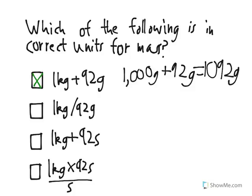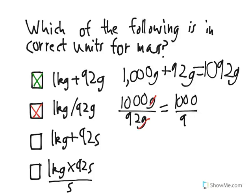Now the second one looks like it might, after all, only includes kilograms and grams, but it isn't. See, the kilograms divided by grams is the same as 1,000 grams divided by 92 grams, and then the grams terms cancel out, leaving us with just 1,000 over 92, which is dimensionless. And this is supposed to be units for mass, which would be grams or kilograms.